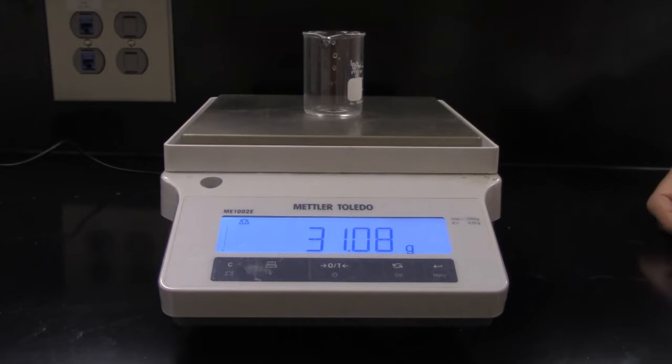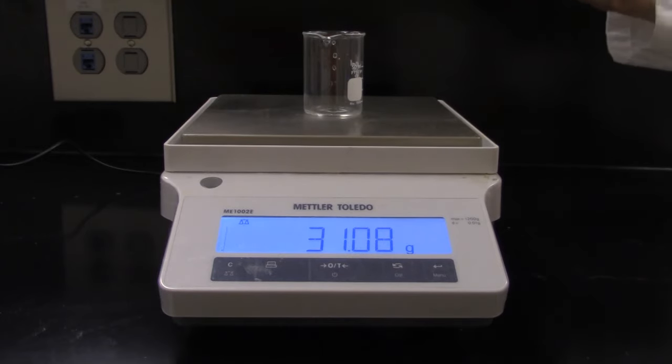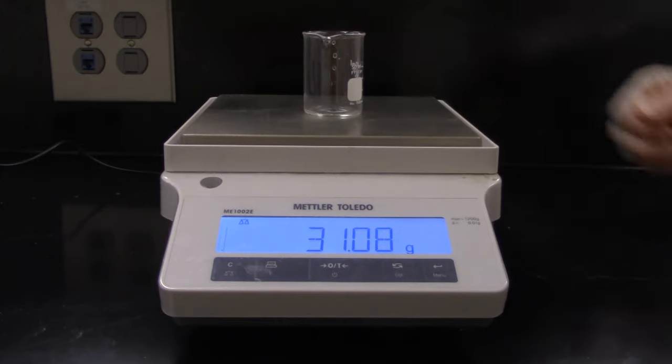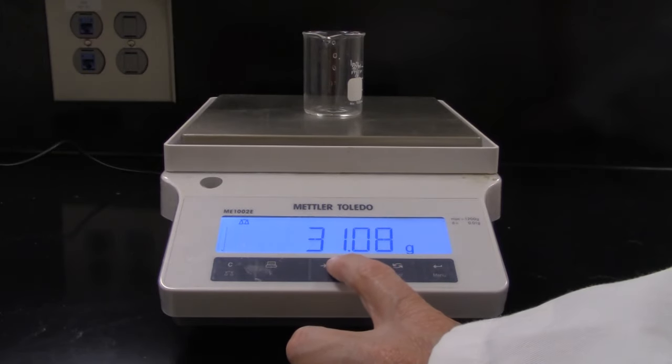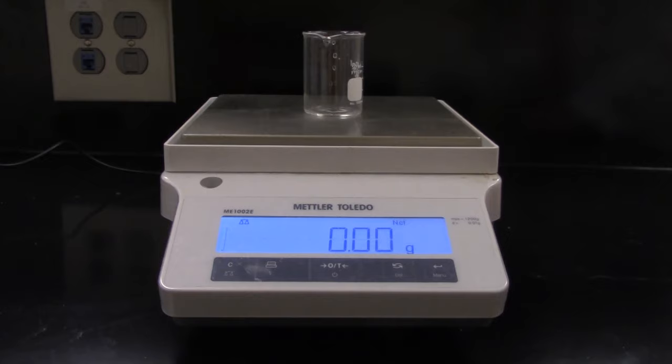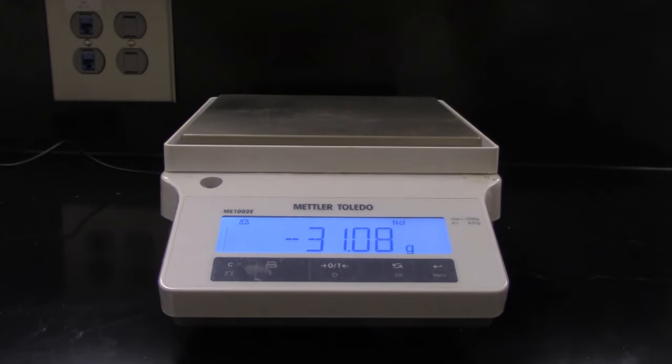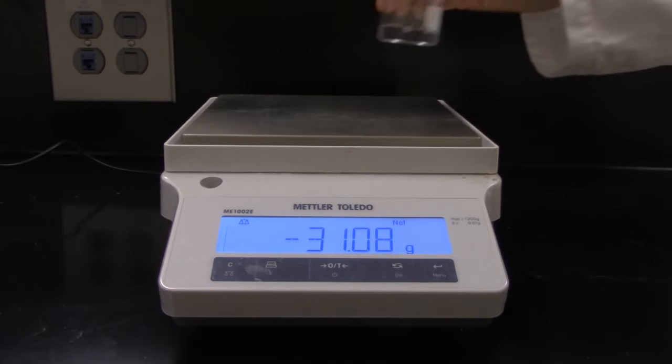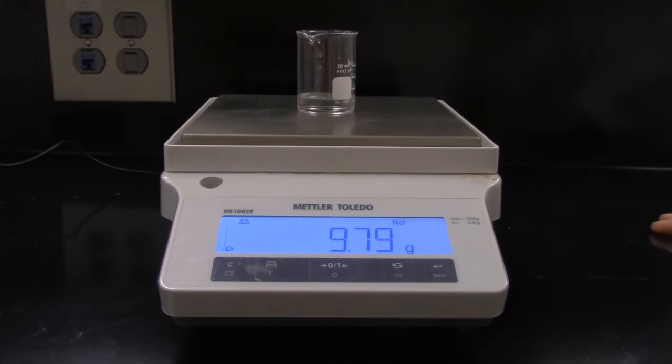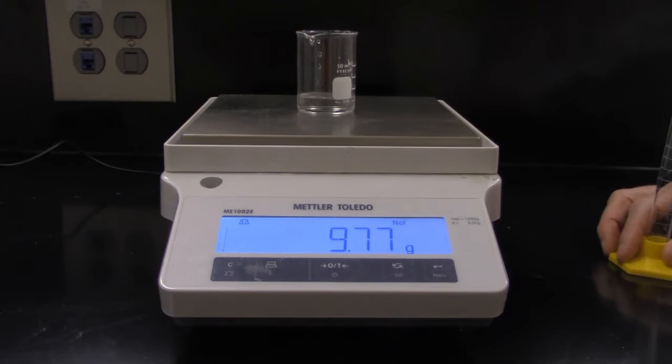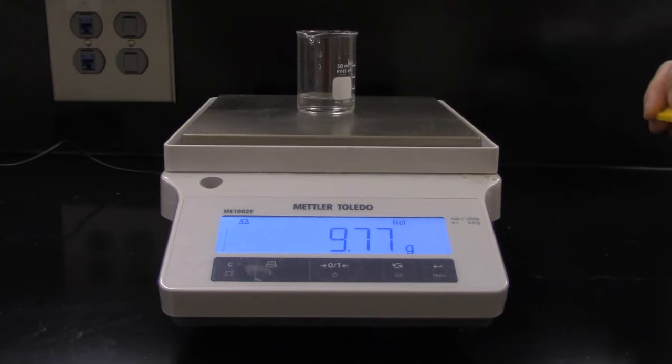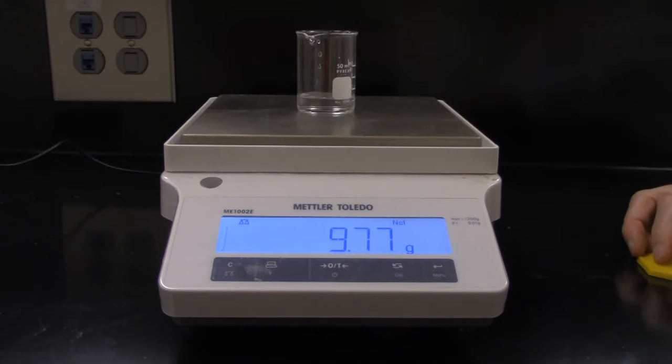If you want to measure the mass of a liquid, then what you can do is push the zero button again with the beaker in place, remove the beaker, pour the water into the beaker, and place it back on the balance. And now you have the mass of the water in the beaker. You should never pour liquids into a beaker while it's on a balance.